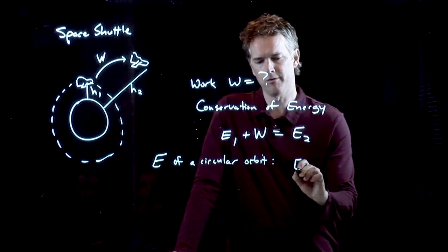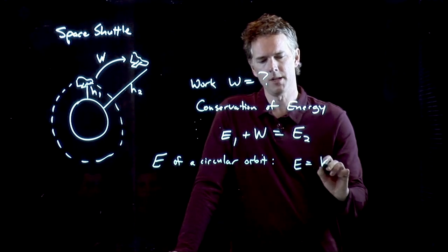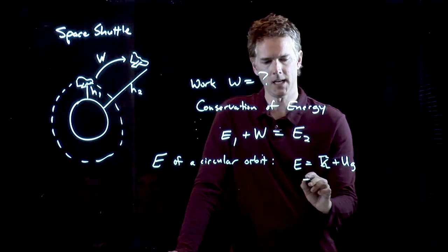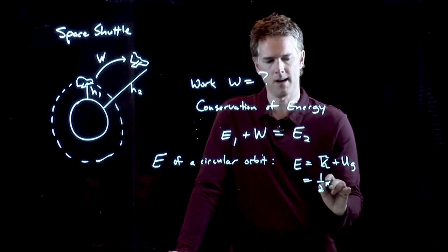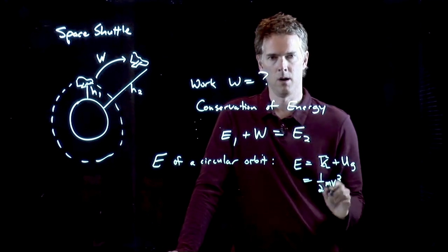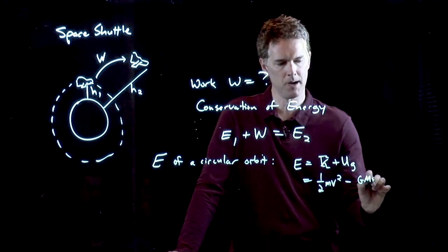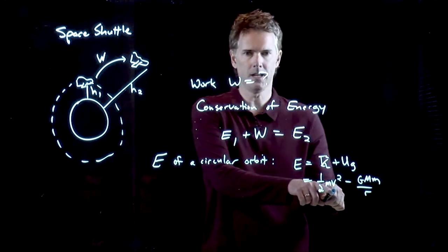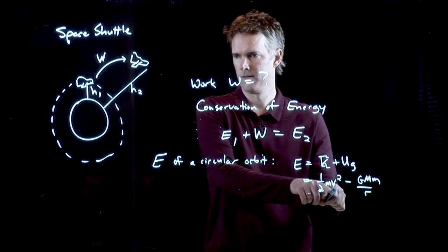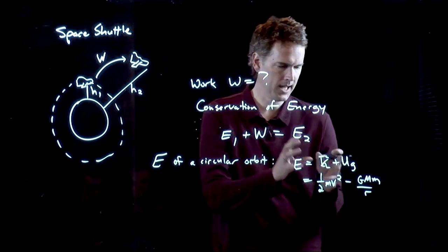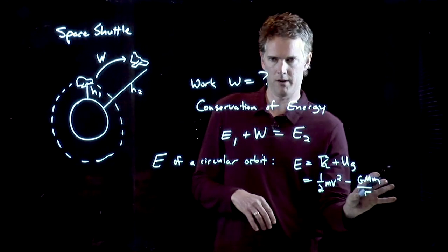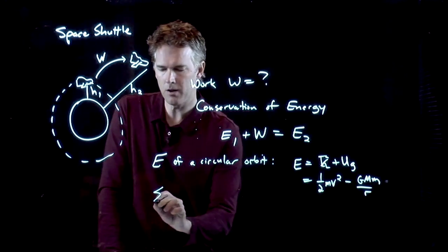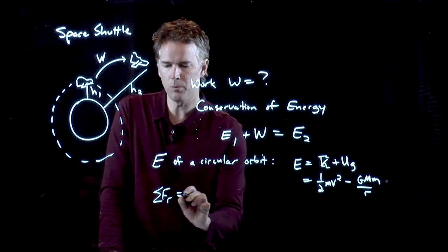We do the following. Energy is always kinetic plus potential. Kinetic is 1/2 mv². What's potential? Negative GMm over r. But we don't know what this speed is, v. Can we somehow relate that speed v to this thing over here? And the answer is yes, if I think about the forces in the radial direction.